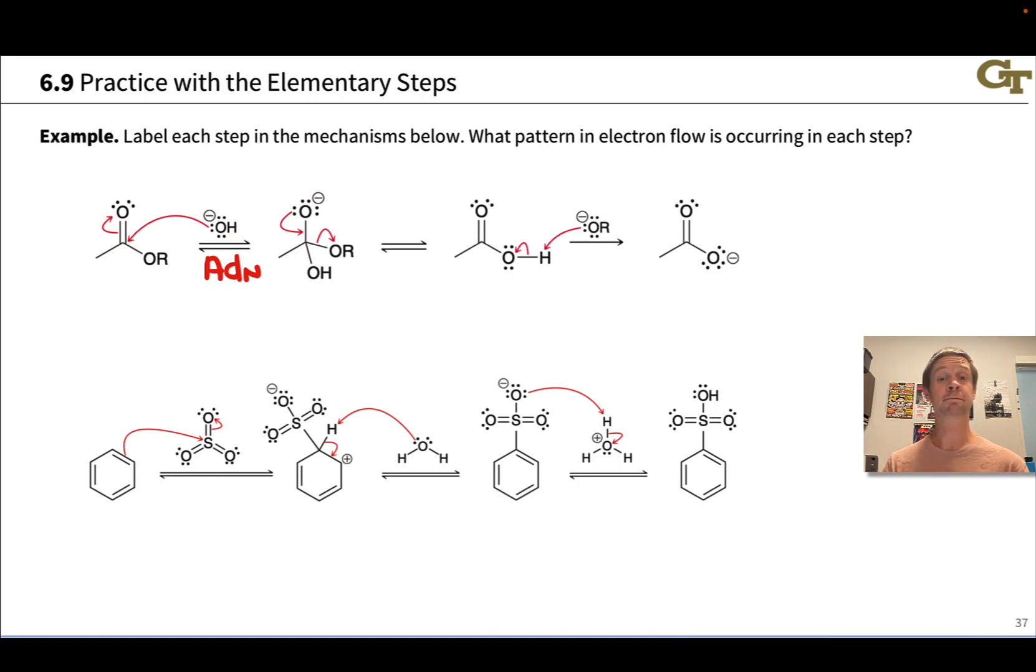In the second step, we get the reverse of that. We get loss of OR as OR minus and the reformation of the carbon-oxygen pi bond. This looks like loss of a leaving group, but with the extra push from this lone pair on oxygen, this is a beta elimination elementary step. What happens in the last step? Now, OR minus, which we just generated, comes along and donates a pair of electrons to this H, and the HO bond breaks toward oxygen. That looks like a proton transfer. The net result is the transfer of a proton from this acid to this base, and so this is simply a PT step.